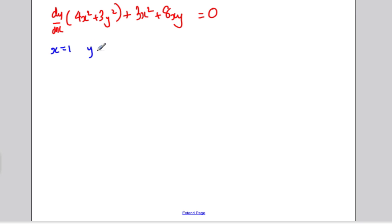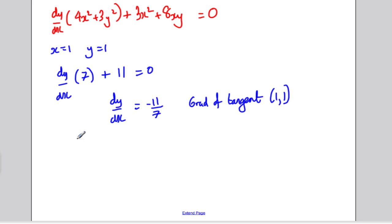So dy/dx, if x is 1, this is 4 and this would be 3, so it would be dy/dx times 7, this would be 3 and this would be 8, so I'd have plus 11 is equal to 0. So solving for dy/dx, dy/dx must be, you subtract 11 and divide by 7, so it's minus 11 over 7. And obviously that's the gradient of the tangent at point (1,1), but you want the gradient of the normal at point (1,1), so the gradient of the normal is the negative reciprocal, that is the negative 1 over minus 11 over 7, which turns out to be 7 over 11.